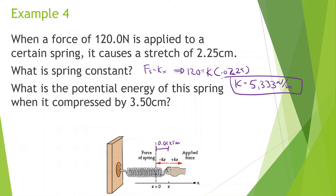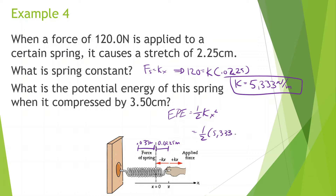What is the potential energy of this spring when it is compressed by 3.5 centimeters? This time we're compressing it 0.035 meters and finding the potential energy. Elastic potential energy equals one-half kx squared, so that's 0.5 times 5,333 times 0.035 squared. We get 3.3 joules of energy when the spring is compressed that much.